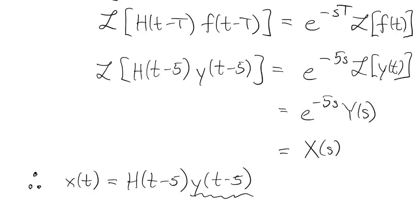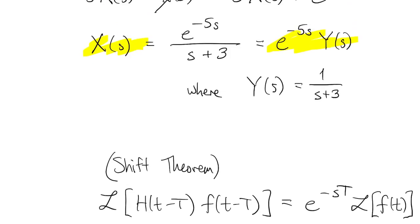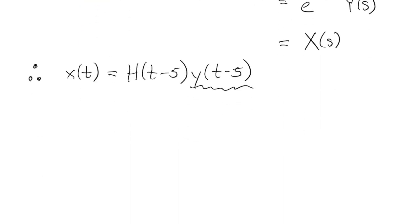So to finish the job, we just have to get a formula for y. Well, from the definition that I made for capital Y, this is easily inverted to give us little y of t as e to the minus 3t.